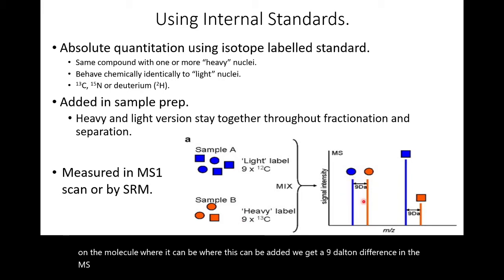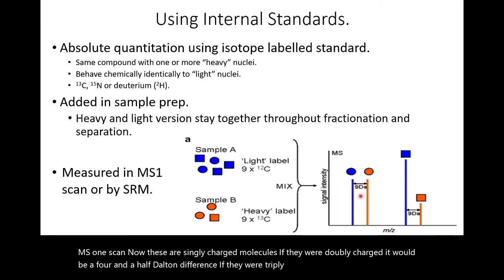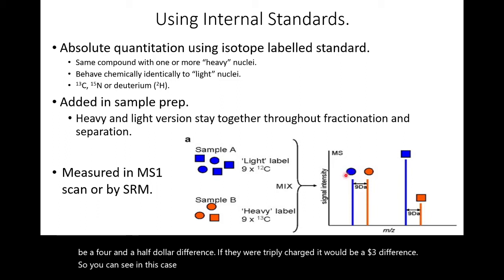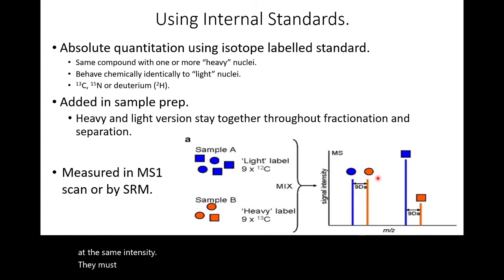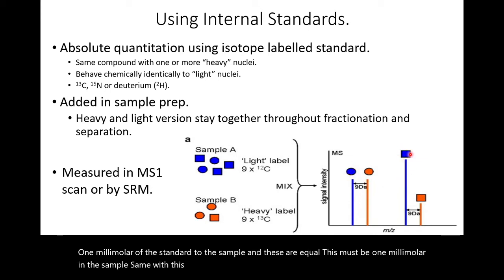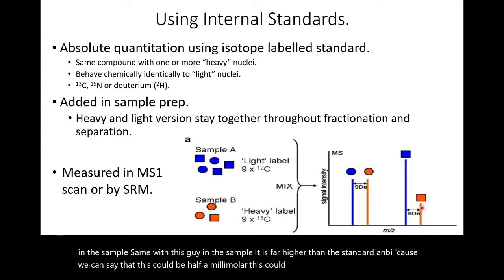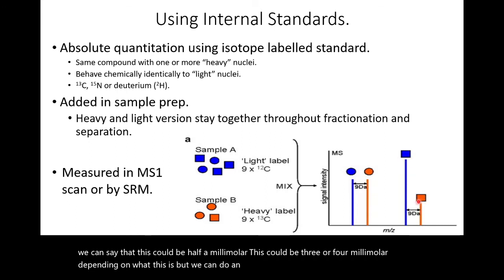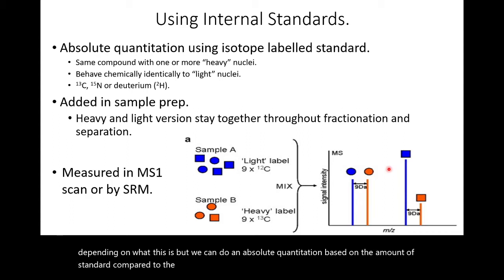These are singly charged molecules — if they were doubly charged it would be a four-and-a-half Dalton difference; triply charged, a three Dalton difference. So if the light sample and the heavy standard are at the same intensity, they must be in equal amounts. Therefore, if we added one millimolar of the standard to the sample and these are equal, this must be one millimolar in the sample. For another molecule far higher than the standard, we can calculate it could be three or four millimolar. We can do absolute quantitation based on the amount of standard compared to the sample, because they both ionize with exactly the same efficiency.